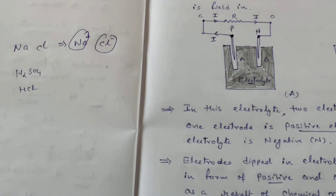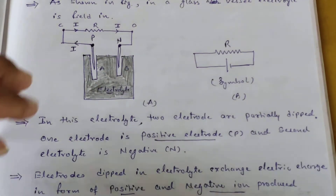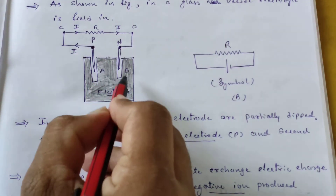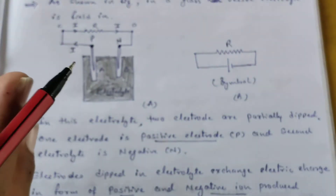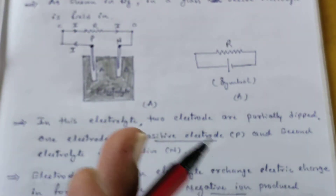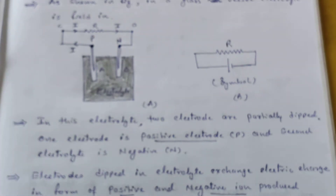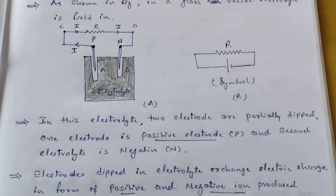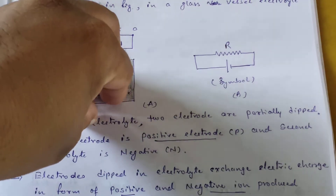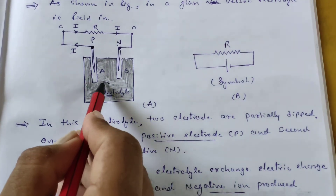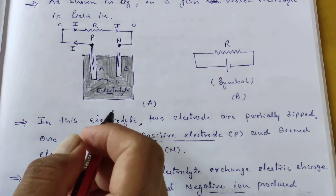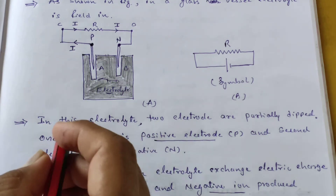When positive ions are moving through the material, that material offers some resistance. The ions move from one place to another through the material. Because of the material, there is resistance offered by the solution, which is known as internal resistance.